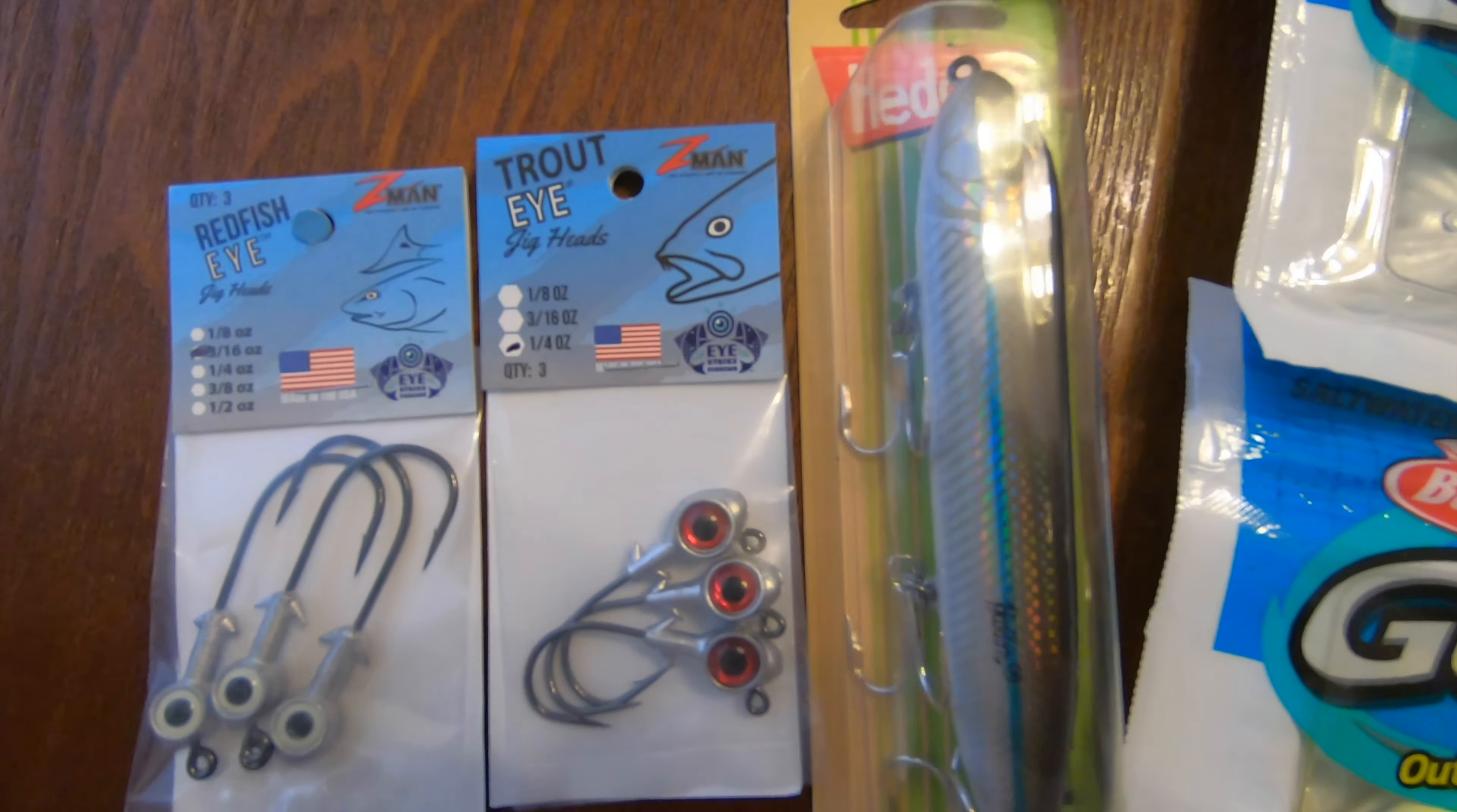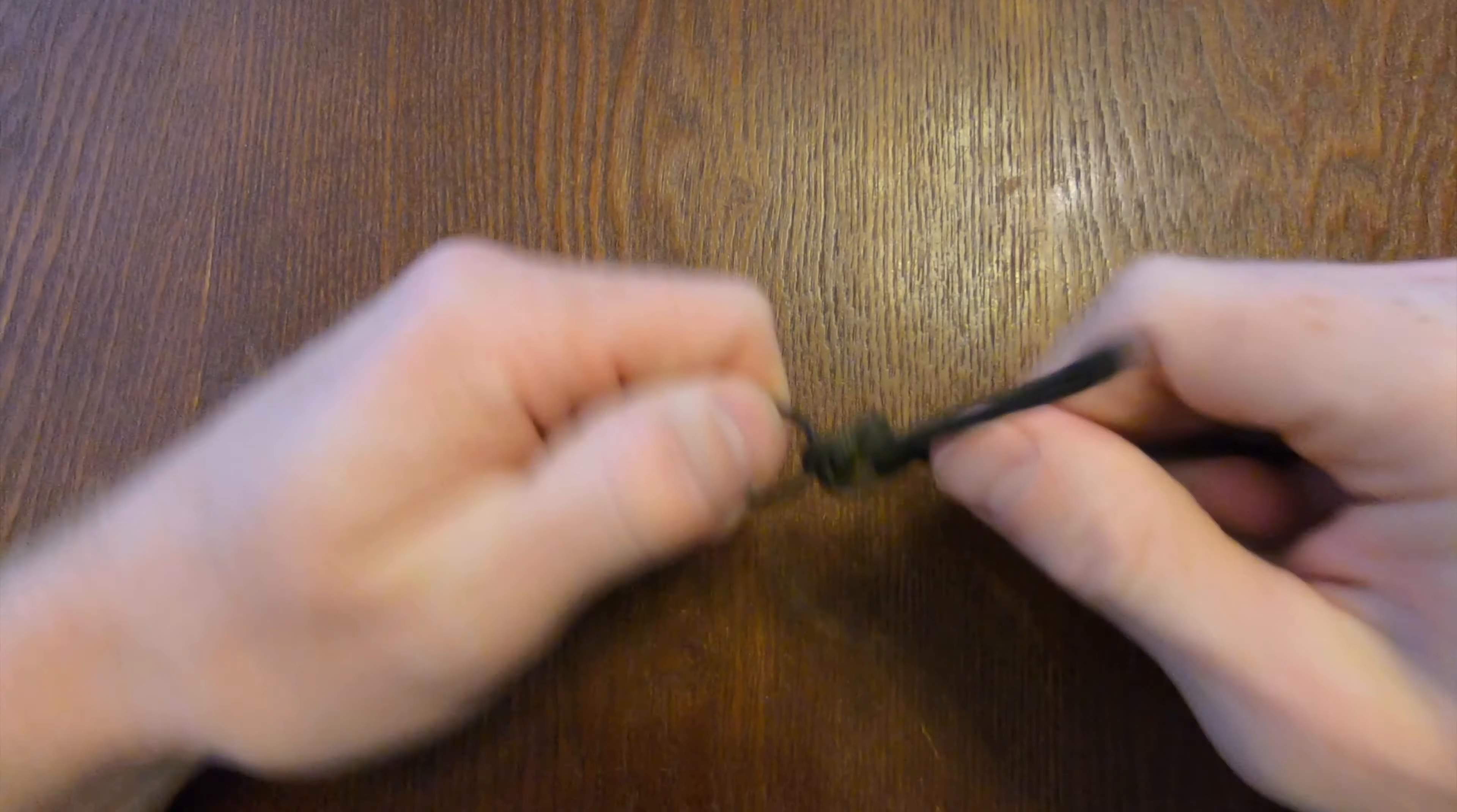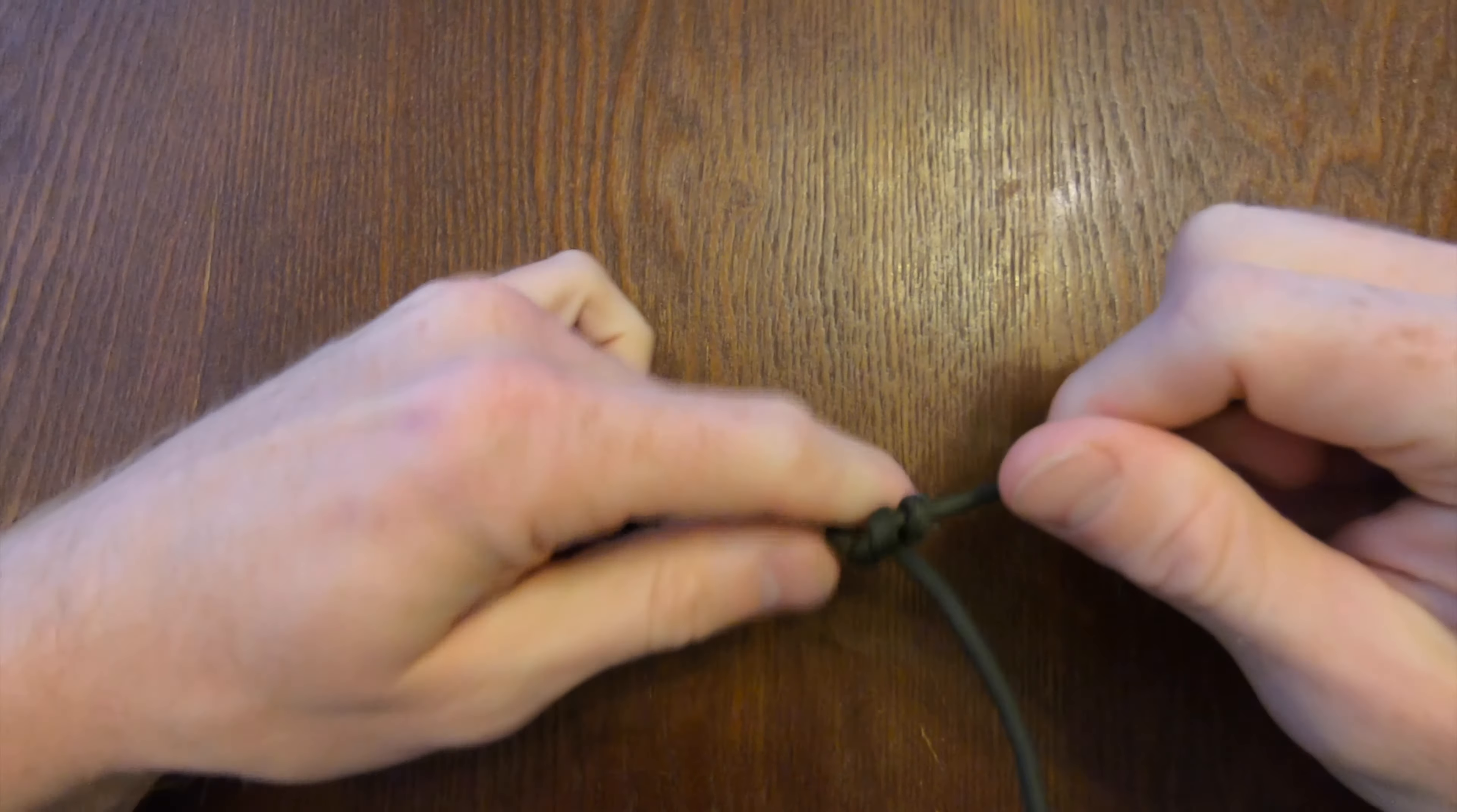And then now, because this paracord doesn't cinch very well, but you're going to grab and cinch down. And then of course you have your improved clinch knot and you're going to clip your tag end.